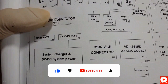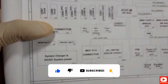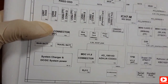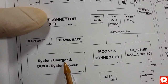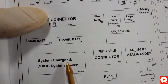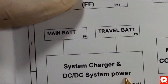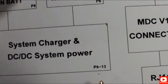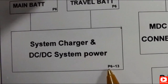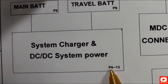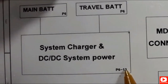You can use this working principle for all ICs and chips on the motherboard. For another example, we have the system charger and DC-to-DC system power — all about power. The system power is covered from page 6 through page 13.